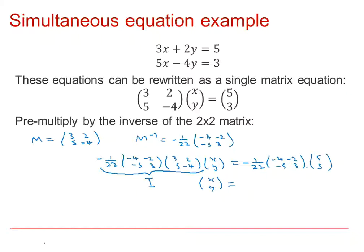If we do the multiplication on the right-hand side — don't forget to multiply by the −1/22 — we get XY equals −1/22 times (−26, −16). Therefore X must be 26/22, which can be cancelled down, and Y would be 16/22, which can also be cancelled down.